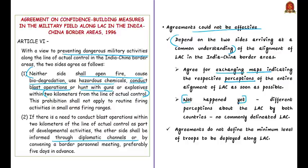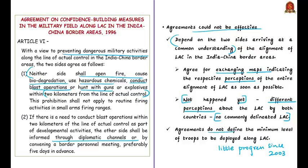There are different perceptions about the Line of Actual Control by both countries. According to the author, the alignment process has made only little progress since 2003 and both sides have only exchanged maps in the central sector. There are overlapping claims at several points of the LAC due to differences in perception, leading to no commonly delineated Line of Actual Control. Another reason for the ineffectiveness of the agreements is that they do not define what the minimum level of troops to be deployed along the LAC should be, which also led to face-offs.